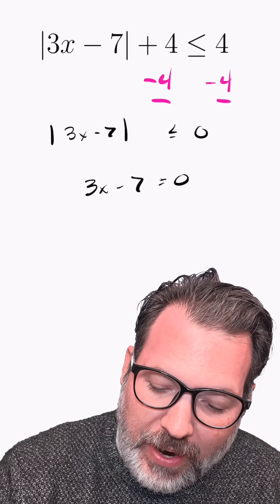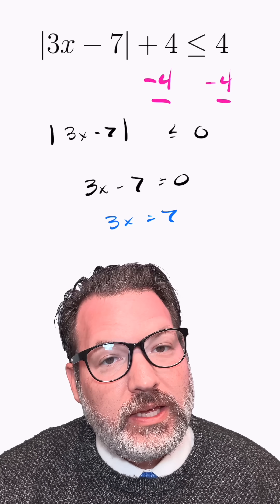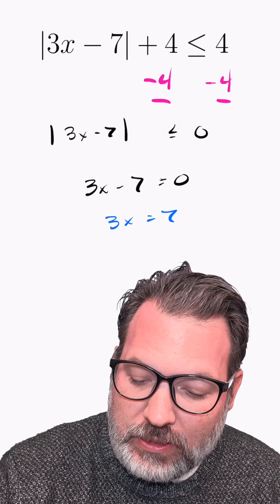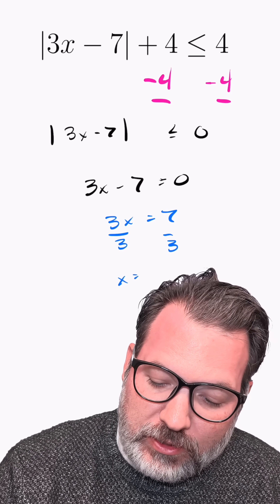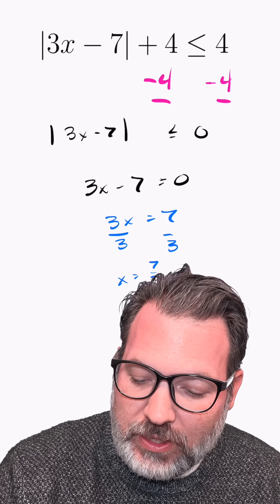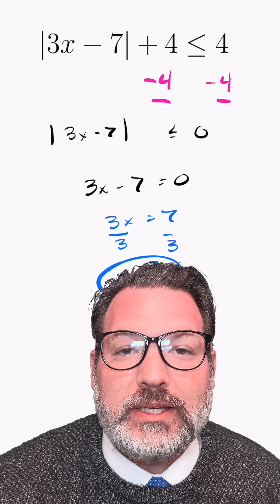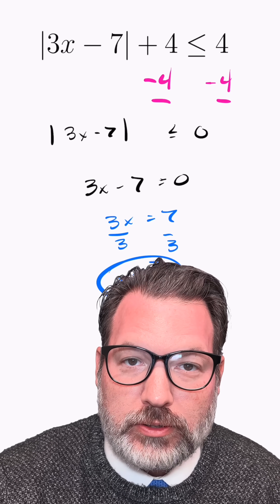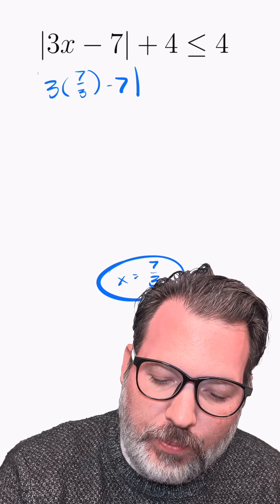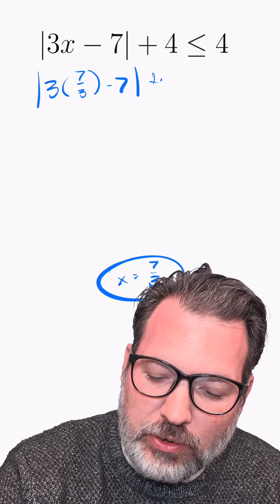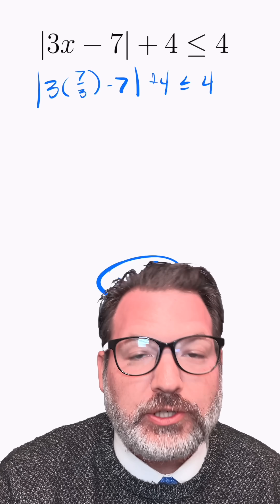3x minus 7 will be 0 where 3x itself is 7. Then dividing by 3 on both sides, we get our solution. This inequality will be true where x equals 7 thirds. You can plug that 7 thirds in all the way back at the beginning and verify that this does actually work.